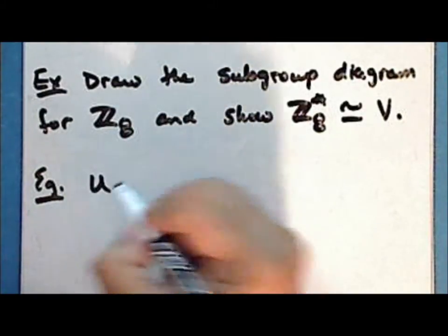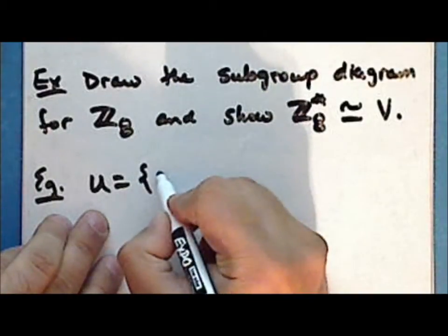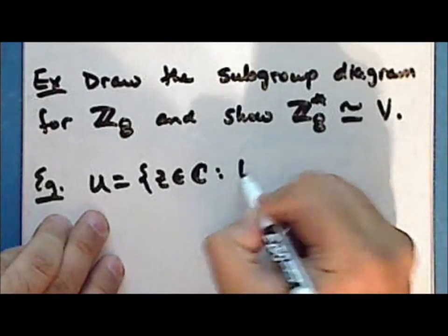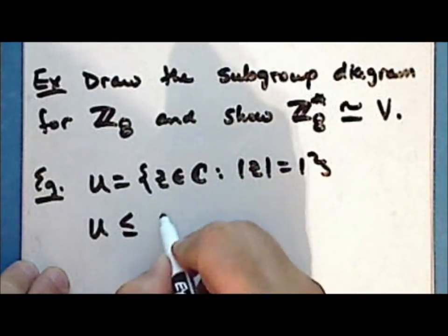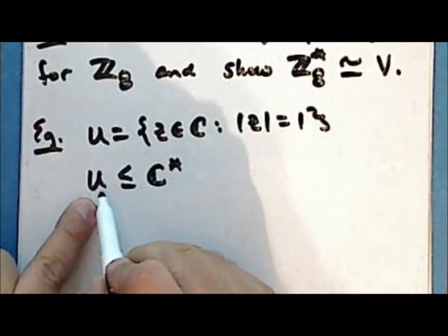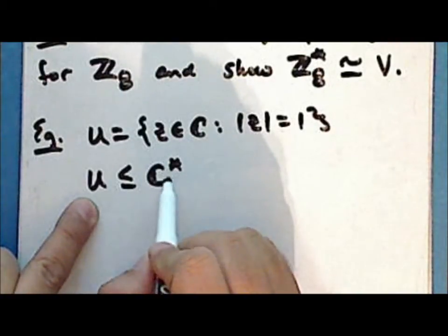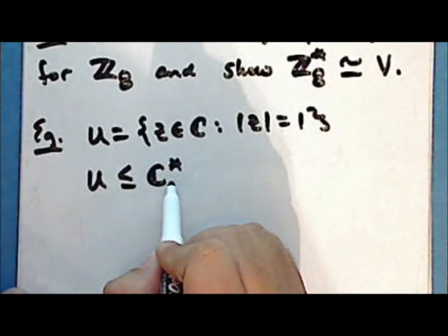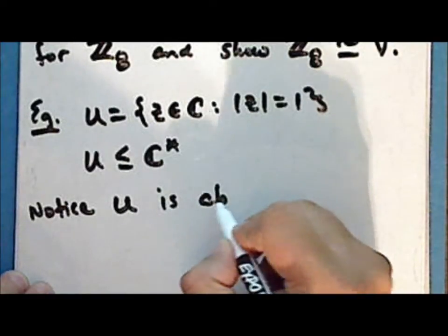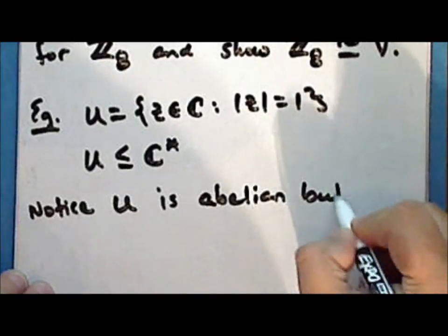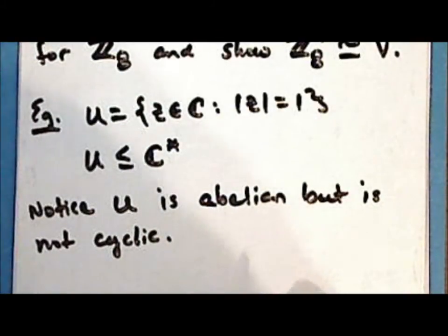Recall that the set of complex numbers on the unit circle under multiplication is a group: the set of complex numbers z such that the modulus of z is equal to 1. This group is a subgroup of the non-zero complex numbers, since the complex numbers on the unit circle is a subset of the non-zero complex numbers that is itself a group under the same operation, namely multiplication. Notice that this group is Abelian but is not cyclic, since the entire group cannot be generated by any single element.